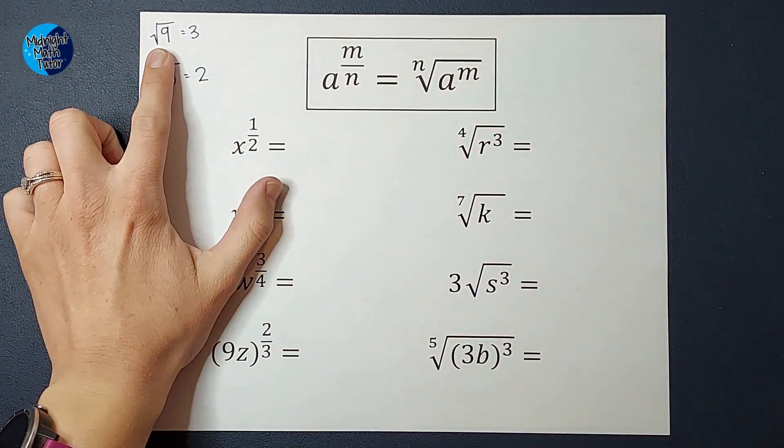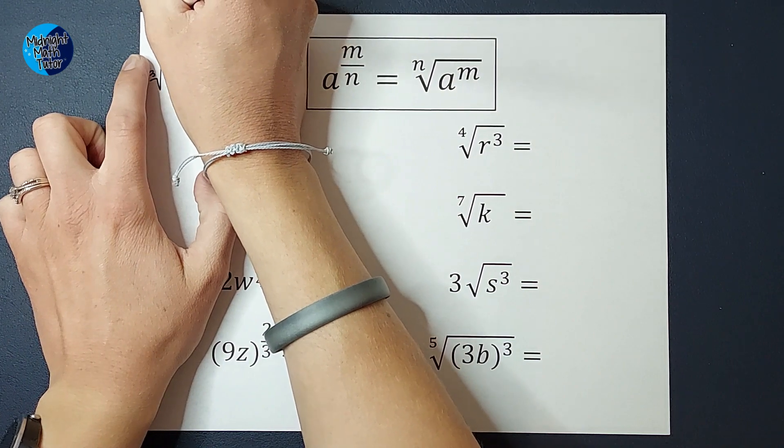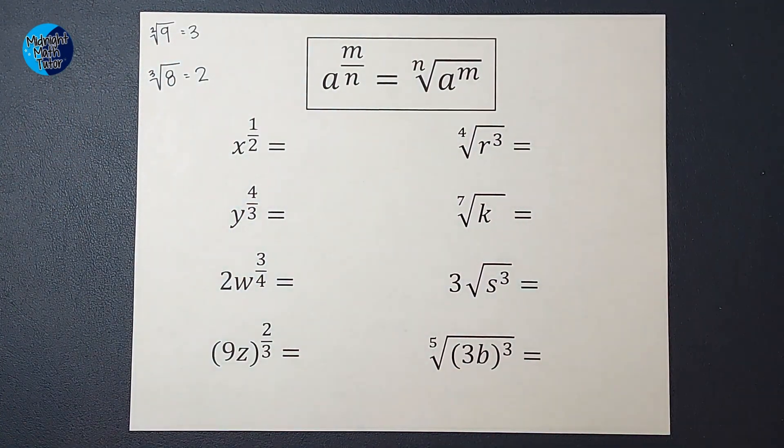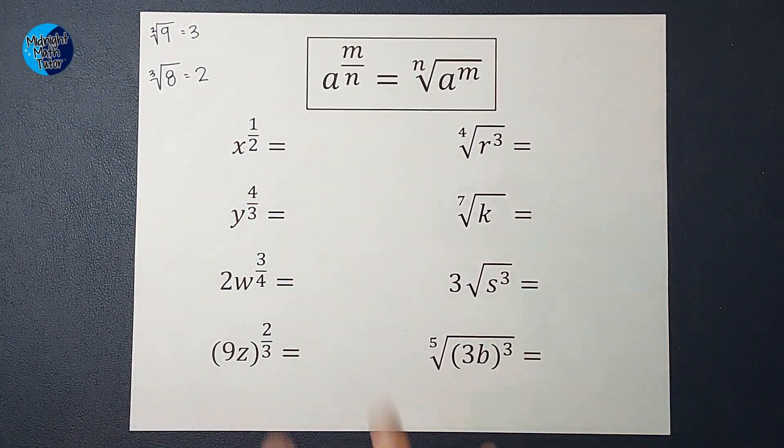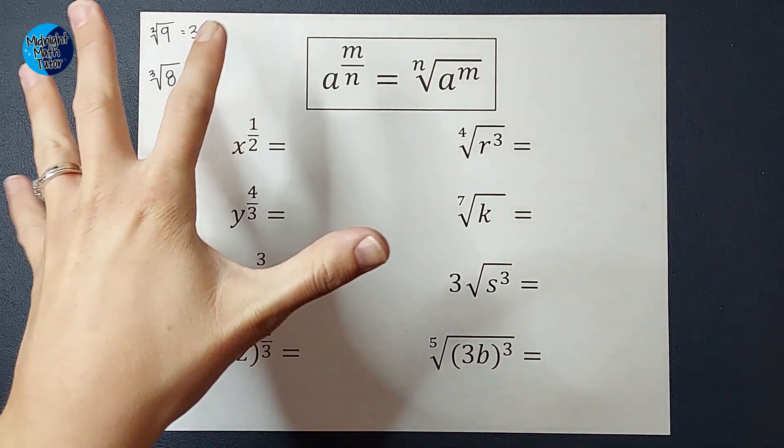So when you see a square root, there is really a 2 here. We just don't normally write it. You will be seeing some here, and they'll kind of disappear because that's how we normally write it. So I just wanted you to be aware of that.